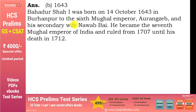Bahadur Shah I 1643 में born हुआ। वह 6th Mughal emperor Aurangzeb की second wife Nawab Bai के पुत्र थे। वह Aurangzeb के बाद 7th Mughal emperor बने और 1707 से 1712 तक उन्होंने rule किया।